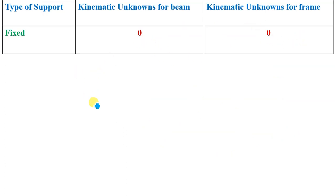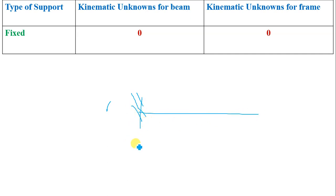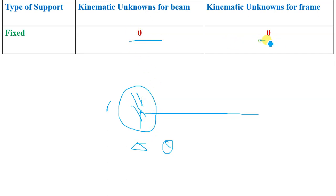Third is fixed support. As we have discussed, the members are firmly fixed at the end with this support. It neither permits displacement in any direction nor rotation. So in case of a fixed support, there are no degrees of freedom for beam as well as for frame.